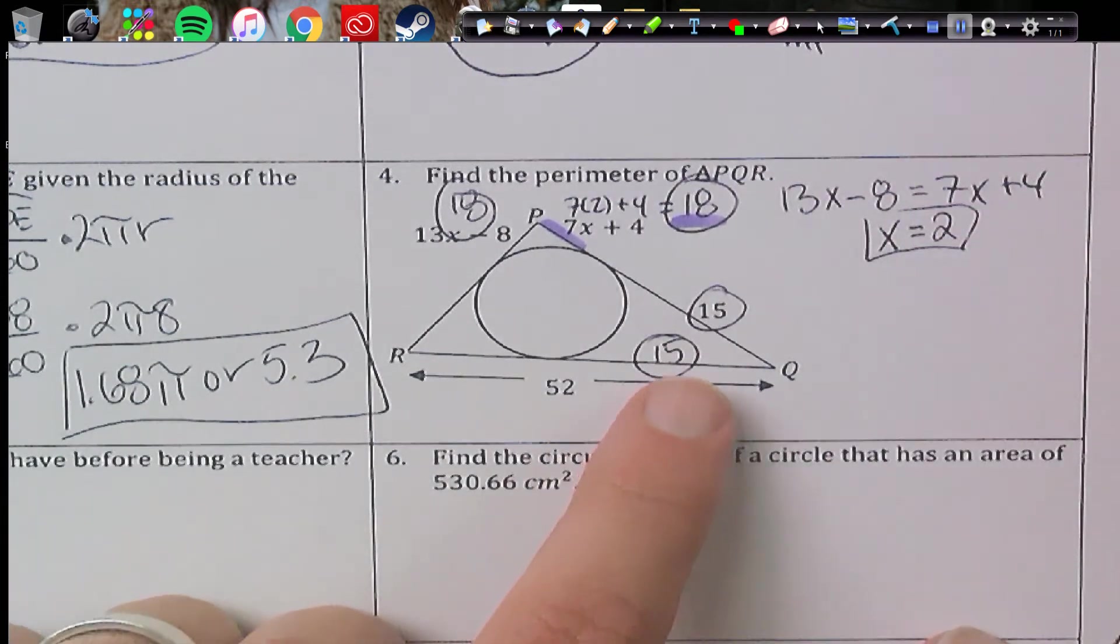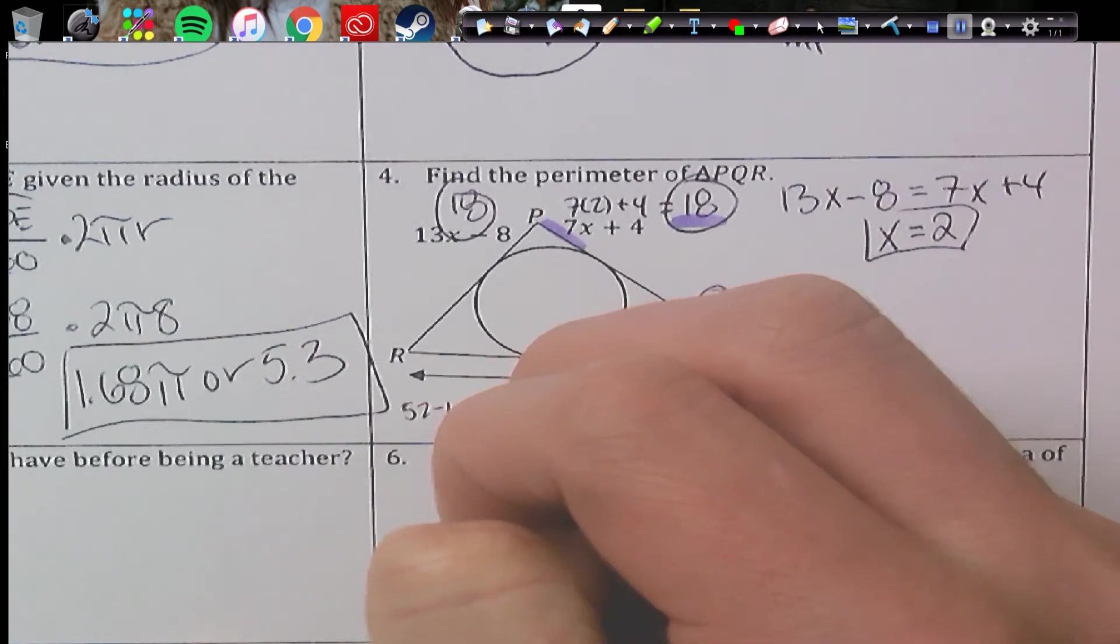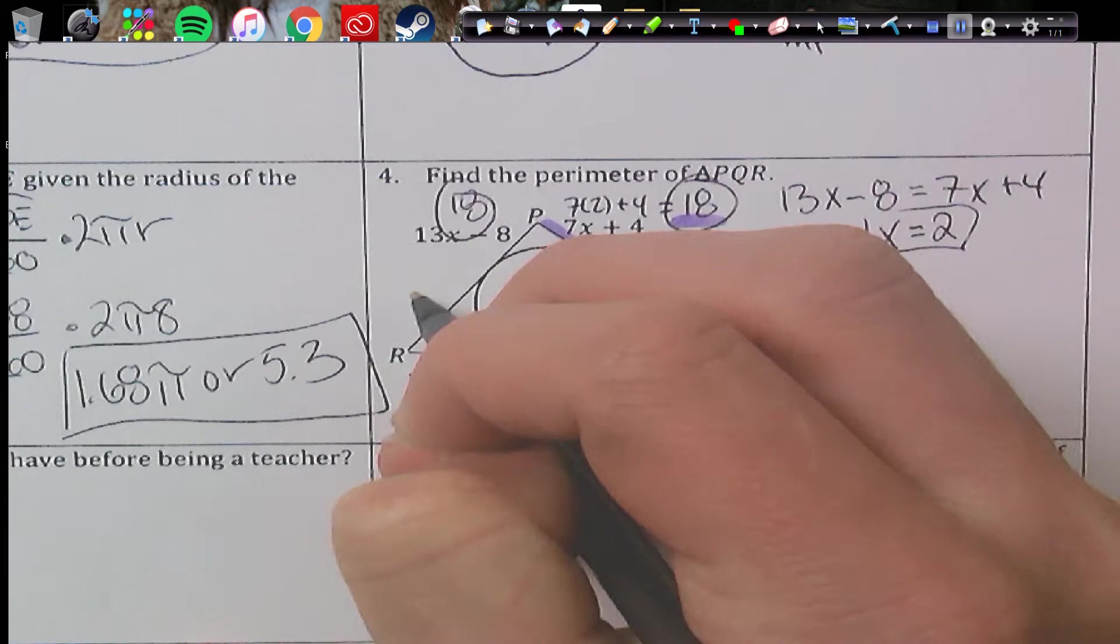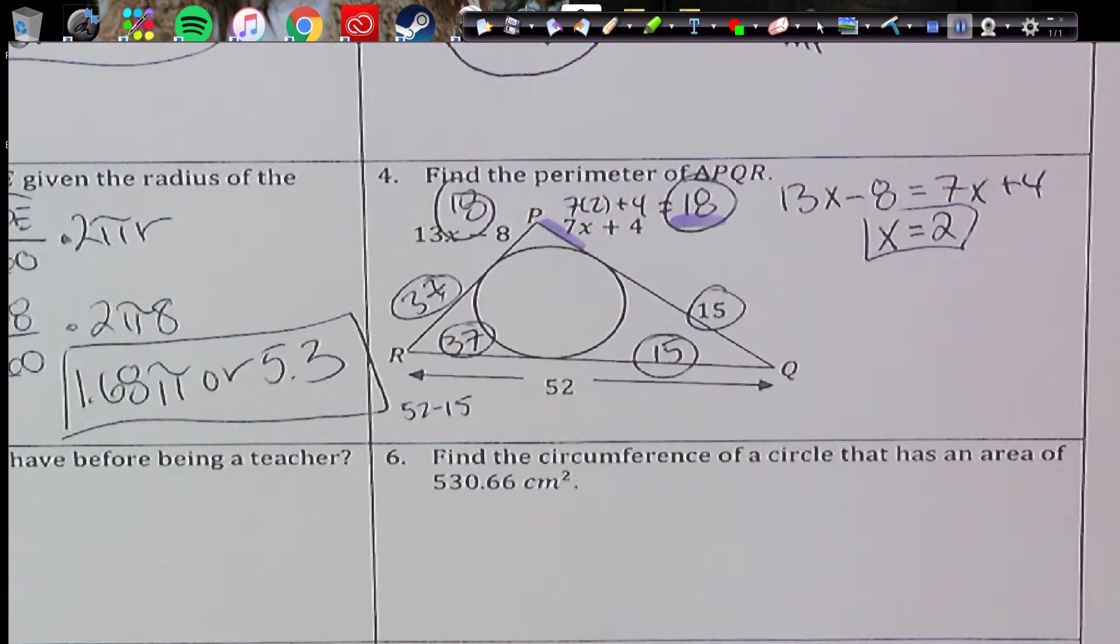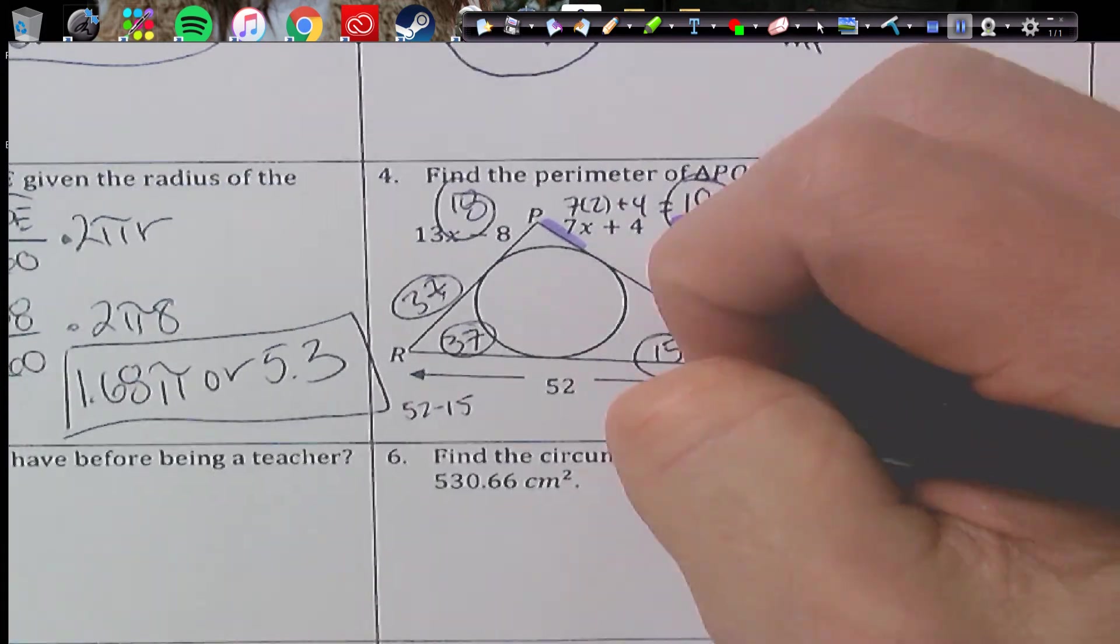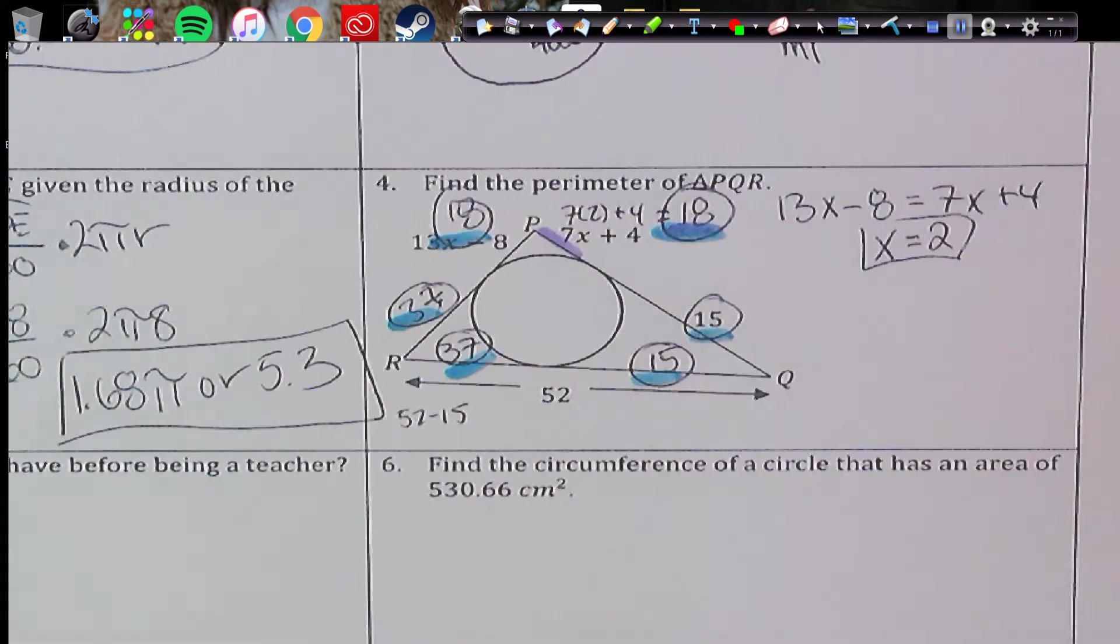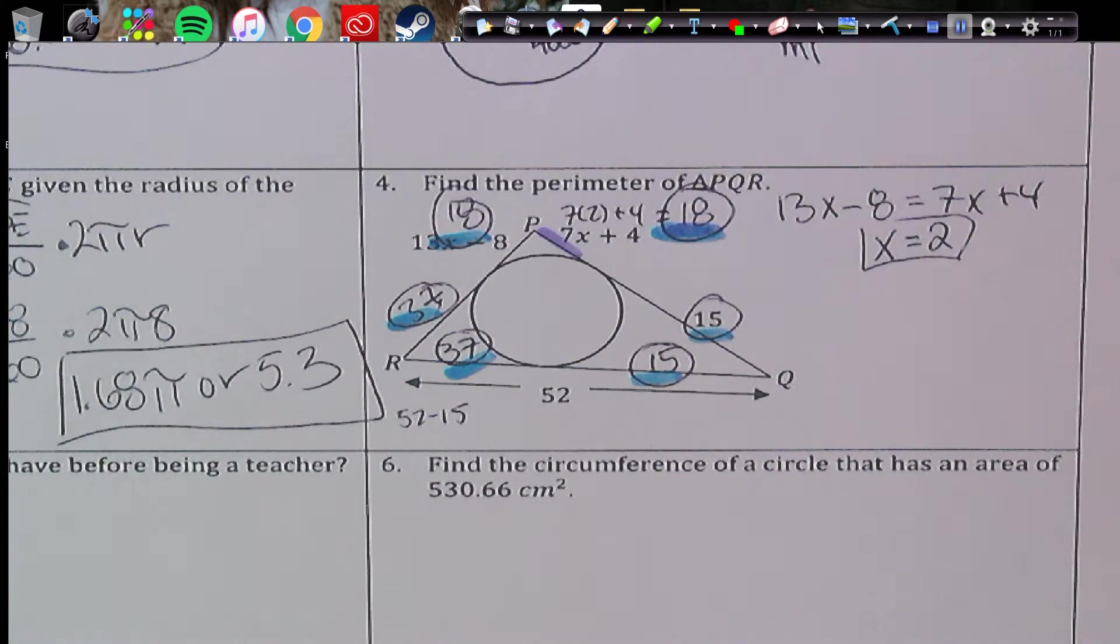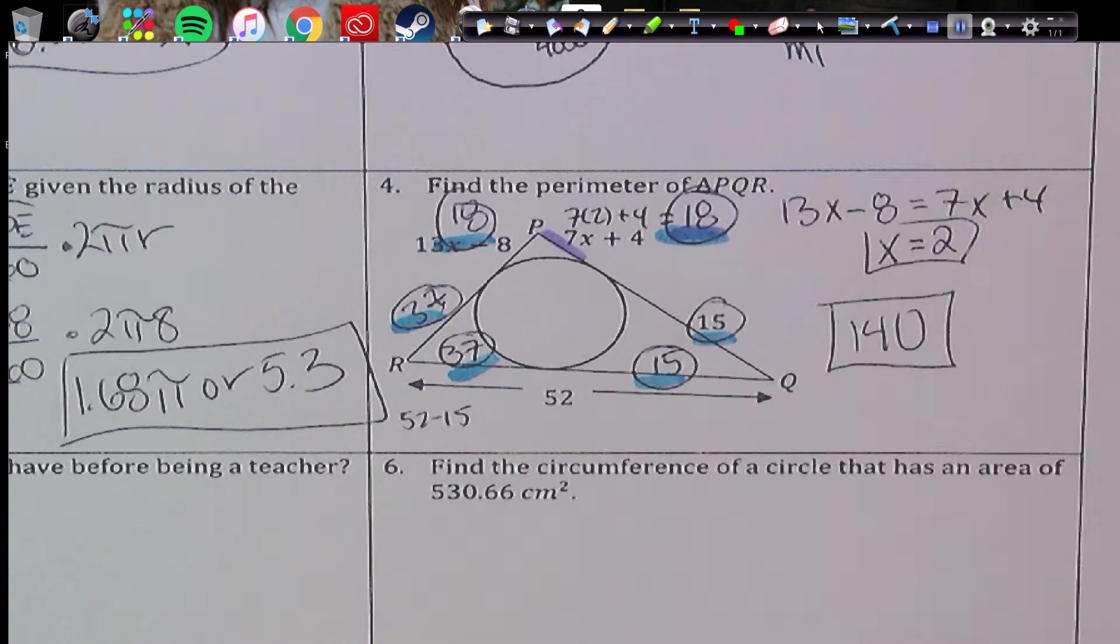This is 15. This is also 15. If you take 15 away from 52, so 52 minus 15, you're going to get 37 for here and here. Essentially, all we have to do is add up all of our circled ones, or all these in blue. And if you add all those up for our perimeter, we're going to get 140 for the perimeter.